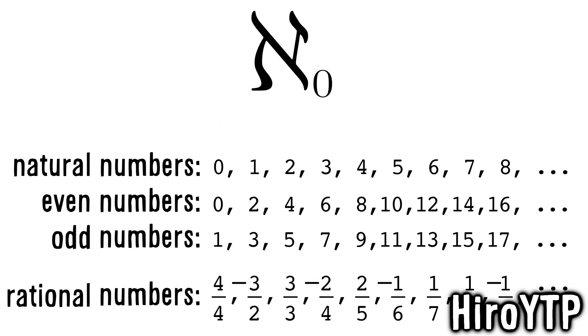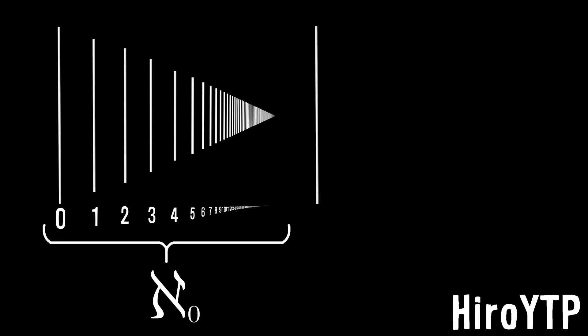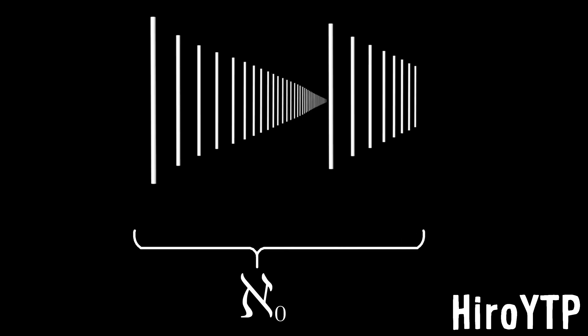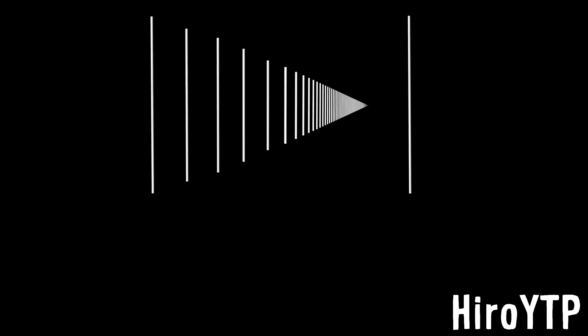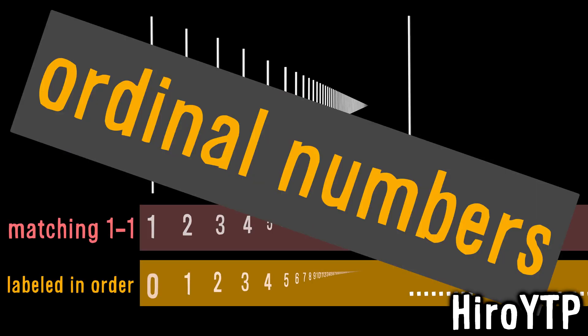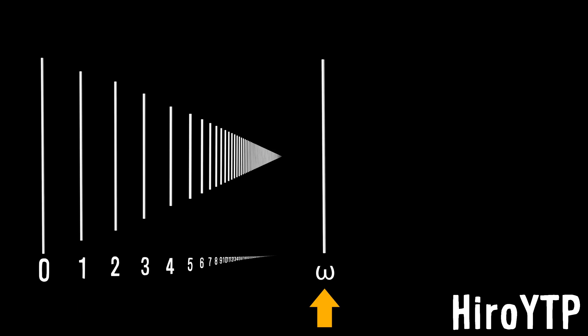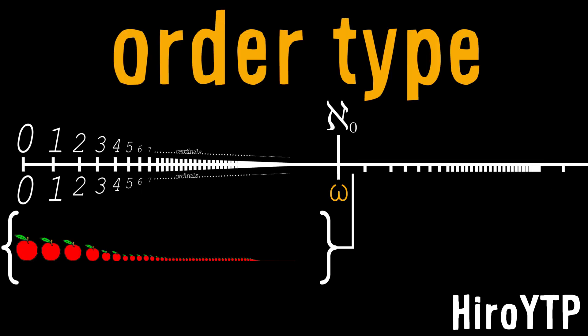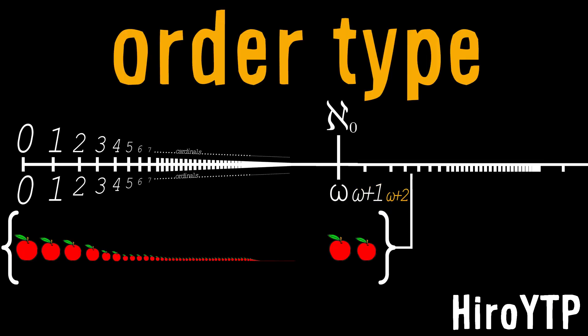Numbers: aleph null, a Google, a Googleplex, a Googleplex factorial to the power of a Googleplex, to a Googleplex squared, times Graham's number, aleph null — numbers aleph null, aleph null plus one, aleph null one, one two three four, aleph null. Omega, omega plus one, two, twelve, eight hundred, omega plus two, omega plus three — omega plus 1 is omega plus 2.